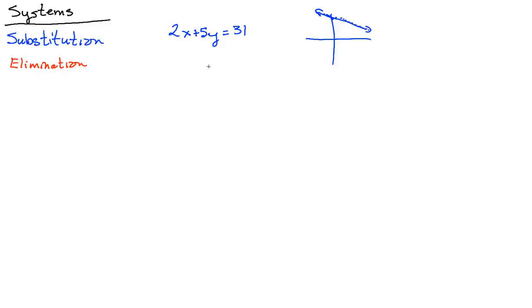On the other hand, if you have something like y equals, say, 4x minus 7, this is one that heads up really steep with a slope of 4. There are infinitely many solutions on this one right here.